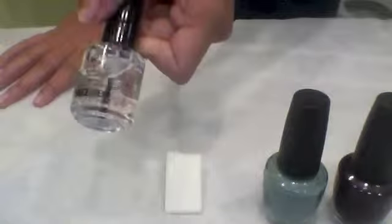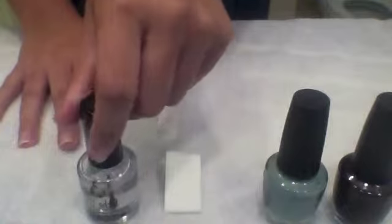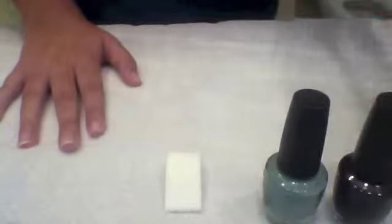You're going to need a makeup sponge. This one's been cut a little bit. And you're going to need Seche Vite top coat. This is my favorite top coat because it's not a gel but it acts like a gel. It never chips and it dries in like two minutes flat. It's awesome.